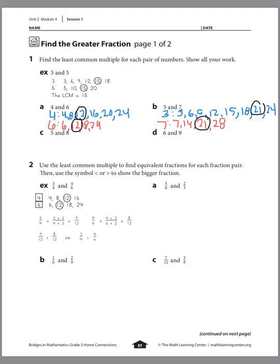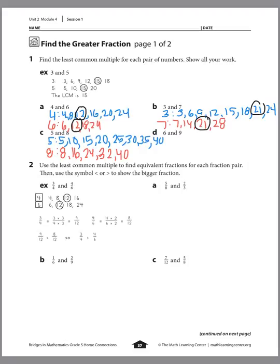Let's do the same for 5 and 8. Listing out the multiples of 5: 5, 10, 15, 20, 25, 30, 35, 40. And for 8: 8, 16, 24, 32, 40. So what's our least common multiple? That's right — 40 is our least common multiple.